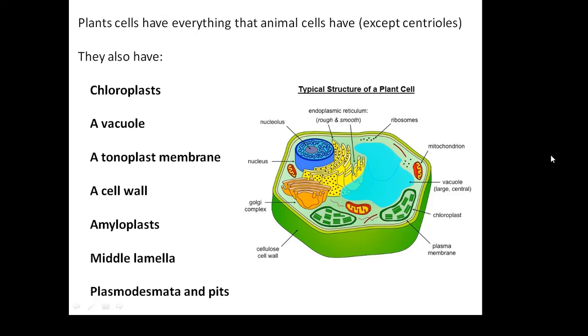Now plant cells also have some other bits and here's a list of all the other bits that you need to know and we will work our way through them. Chloroplasts, a vacuole, tonoplast membrane, a cell wall, amyloplasts, middle lamella, plasmodesmata and pits.